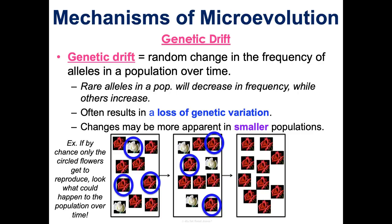We also see something called the founder effect, where a small group of organisms in a population isolates themselves and only reproduces with each other, causing a big decrease in genetic variation. We see this in the Amish population in North America, where a group of people isolate themselves and only reproduce within their group, so there's such a limit to how much variation is in that population. But evolution is still occurring if the overall population's gene frequency is changing.